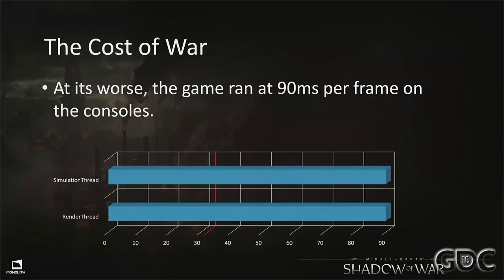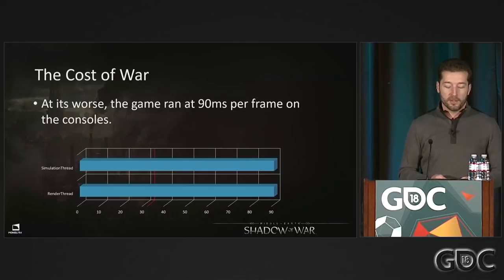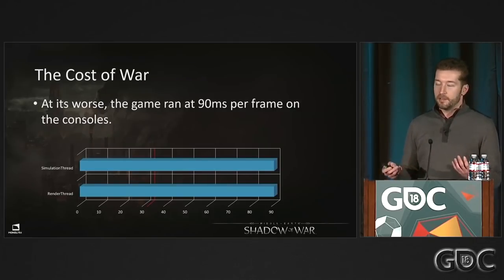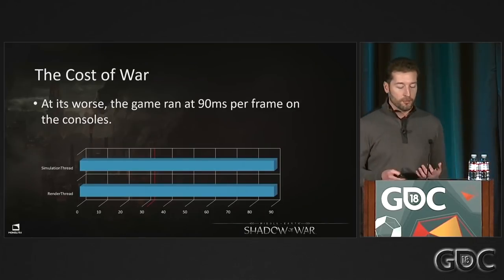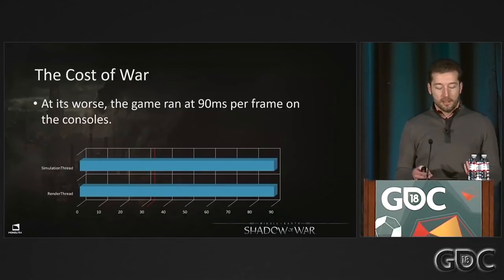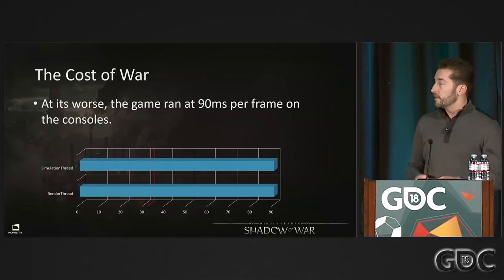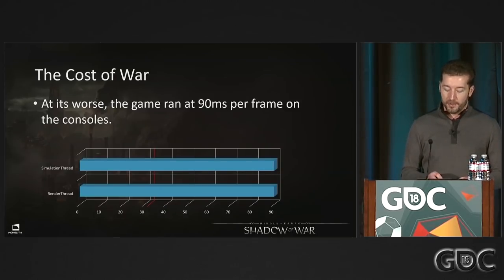As we approached beta and profiled the game on consoles like PS4 or Xbox One using the Shadow of Mordor engine, the result was we had pushed everything so far — 200 guys instead of 60, all way more expensive to render — that the AI logic and rendering cost combined was insane. We were sitting at 90 milliseconds, and we still needed to ship this game.